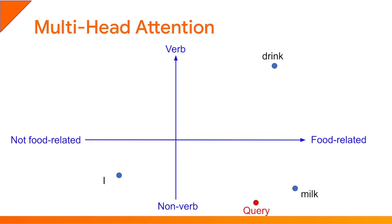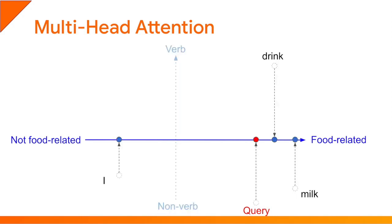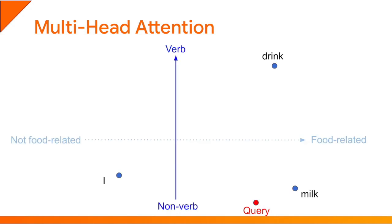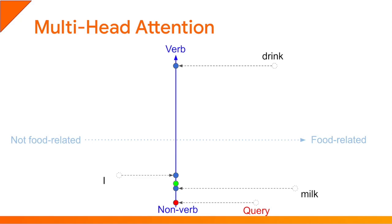Why are the attention layers called multi-head attention layers? A multi-head attention layer runs multiple computations in parallel called heads. Each head starts with a linear layer that projects the word representations and the query down to a lower number of dimensions. For example, one head may project onto the food-related axis, while another head may project onto the verb axis. This allows the multi-head attention layer to look for specific things about words — such as whether it's a verb — without being polluted by all the information in other dimensions. The outputs of all the heads get concatenated back together and go through a final dense layer, forming the output of the multi-head attention layer.